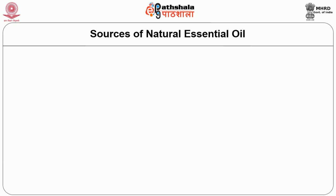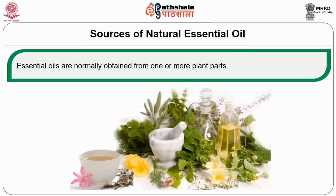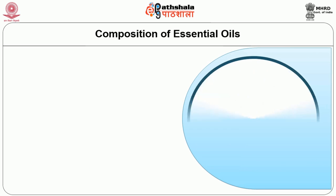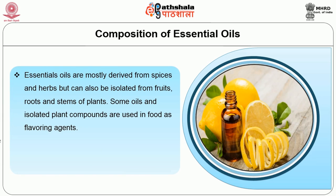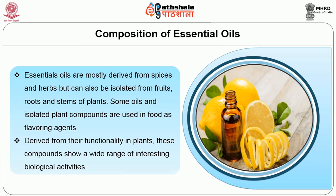The sources of natural essential oil: these are commonly obtained from one or more plant parts such as flowers, leaves and stems, woods, roots, seeds, fruits, rhizomes and gums or oleoresin exudations. The composition of essential oil are mostly derived from spices and herbs but can also be isolated from fruit, roots and stems of plants. Some oils and isolated plant compounds are used in foods as flavouring agents, derived from their functionality in plants.